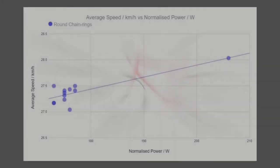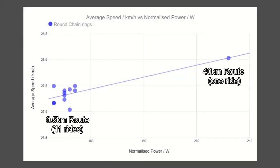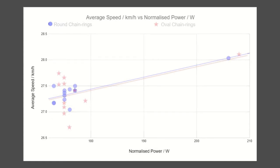Let's start by looking at the data for the round rings only. The graph shows average power versus average speed. Let's overlay the oval ring data. Now these were paired rides, ridden under as near identical conditions as possible. The solid lines are linear fit trend lines. As you can see, the scatter in the oval chainring results is much greater than that of the round chainrings, and much greater than the difference between the trend lines.